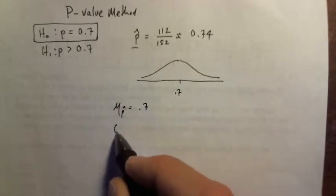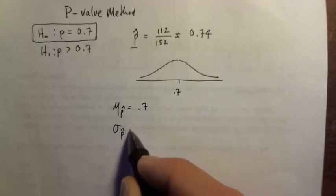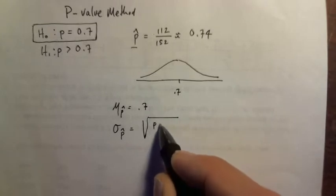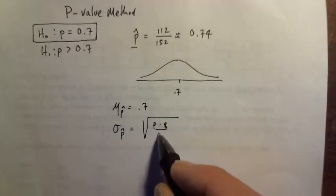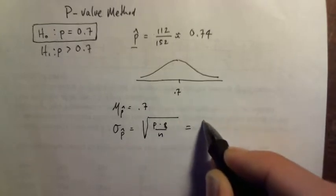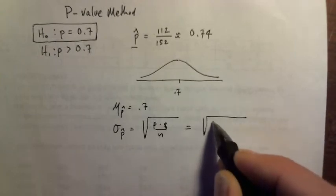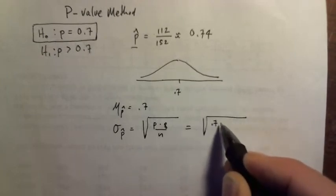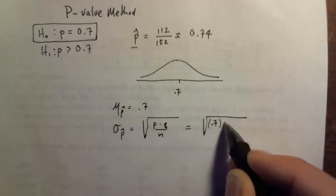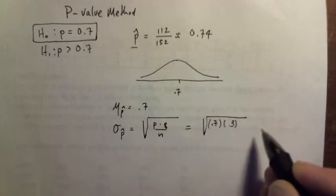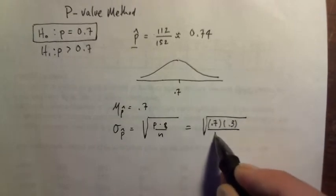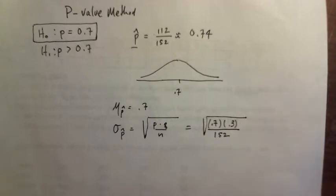The standard deviation of p-hat would be equal to this: p times q divided by n, which in this case is 0.70 because that's what we are assuming p is, times 0.3 and 152, because 152 is our sample size.